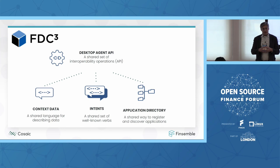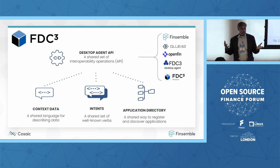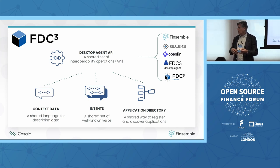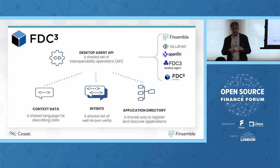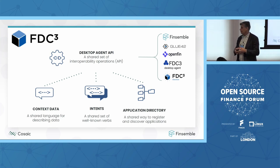All of these things are tied together by the desktop agent API. There are several desktop agents available today — at COSAIC we have Finsemble, which we're quite proud of. Glue42 and OpenFin are also commercially available solutions. The FDC3 desktop agent is a browser plug-in, and we just released the FDC3 Electron, an open source version of a desktop agent. There are a lot of tools out there to build your smart desktop solutions.